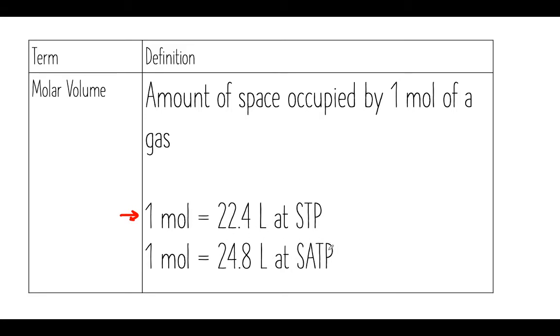And at standard ambient temperature and pressure, one mole of a gas contains 24.8 liters. And when we look at stoichiometry, we can use this conversion factor as a way to convert from moles to liters or from liters to moles. This is known as our molar volume, the volume of one mole of a gas at a certain temperature and pressure.